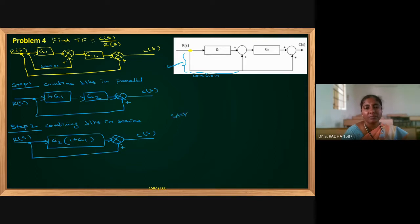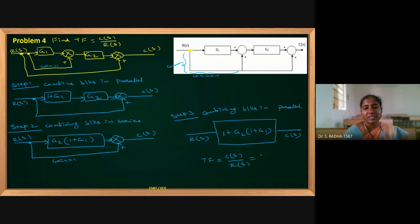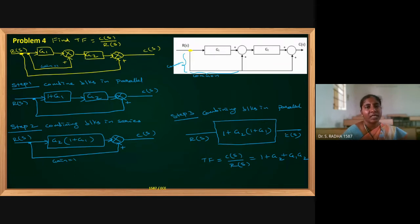Now going to step 3: both paths are in the forward direction, so they are parallel paths. Here gain equals 1 — this is not feedback, it is forward direction. Combining blocks in parallel — we add them. So the result is 1 plus G2·(1 plus G1). The overall input is R(S) and output is C(S). The final transfer function, C(S)/R(S), simplifies to 1 plus G2 plus G1·G2. This is the final transfer function.